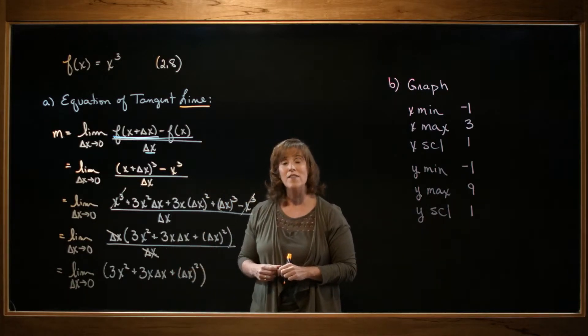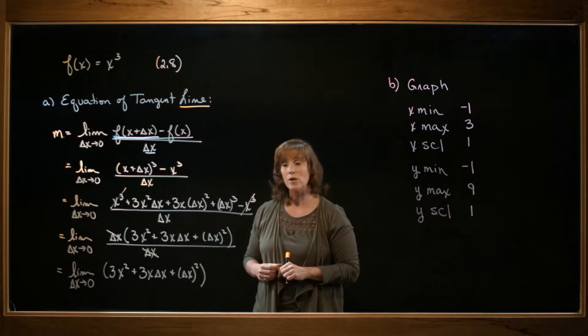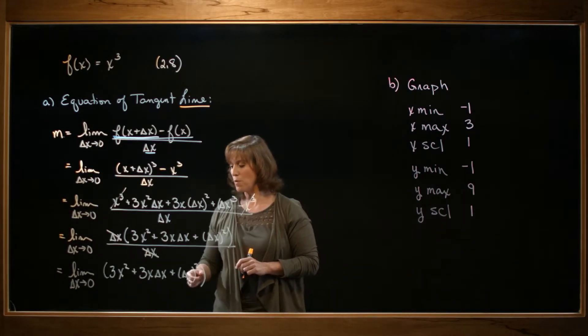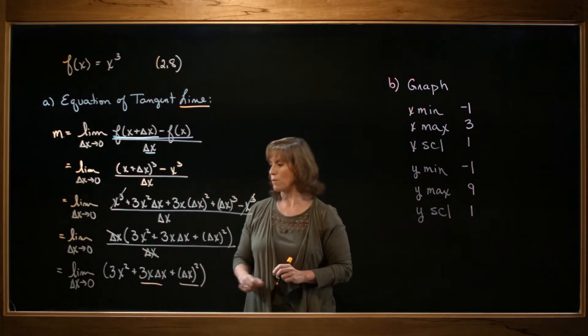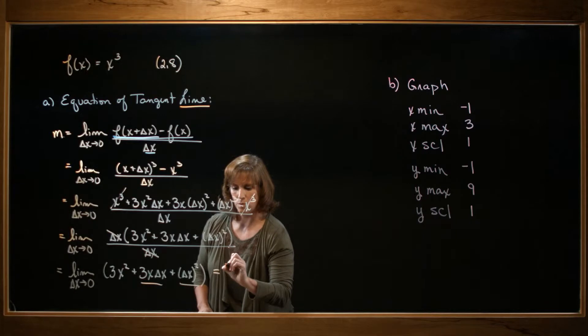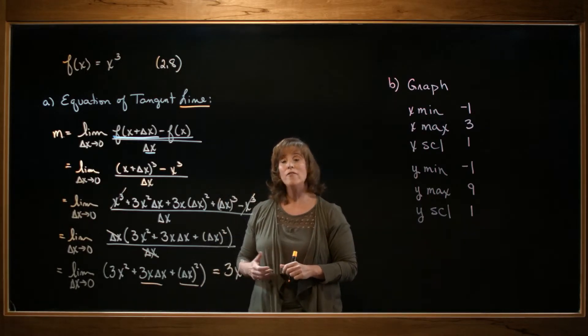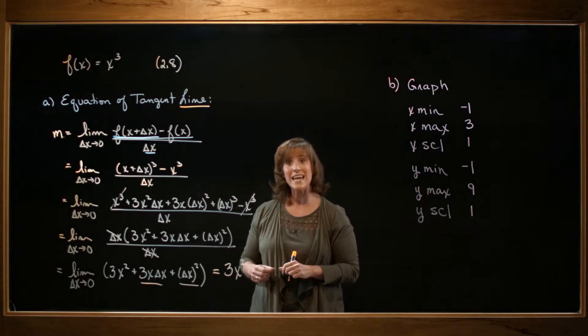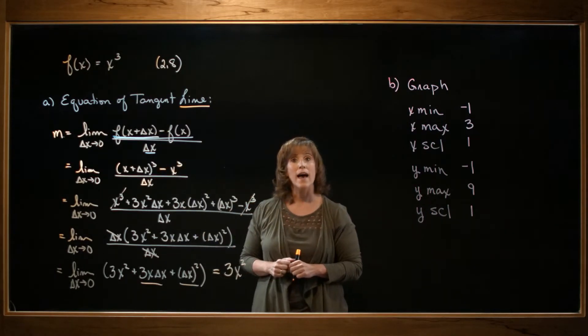Well, I no longer have that indeterminate form zero divided by zero. So I'm going to be able to evaluate my limit. As delta x approaches zero, notice that the second and the third term both go to zero. The first term remains a 3x squared. So I've evaluated the slope of my tangent line at any point along the curve x cubed.